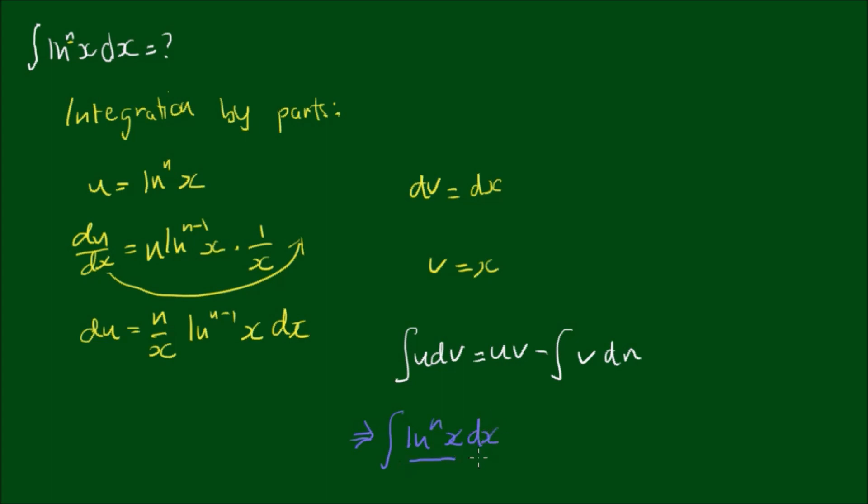With this part being u, with this part being dv equals u, which is log to the nth power of x by v, which is x minus the integral of v, which is x, du, which is n on x by the natural log to the nth power of x.